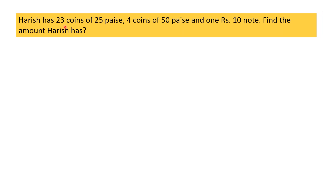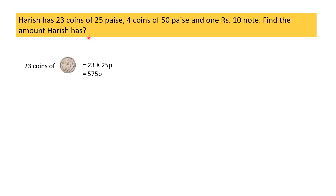Harish has 23 coins of Rs. 25, 4 coins of Rs. 50, and 1 Rs. 10 note. Find the amount Harish has. Now, Harish has 23 coins of Rs. 25, which equals 575 paisa.